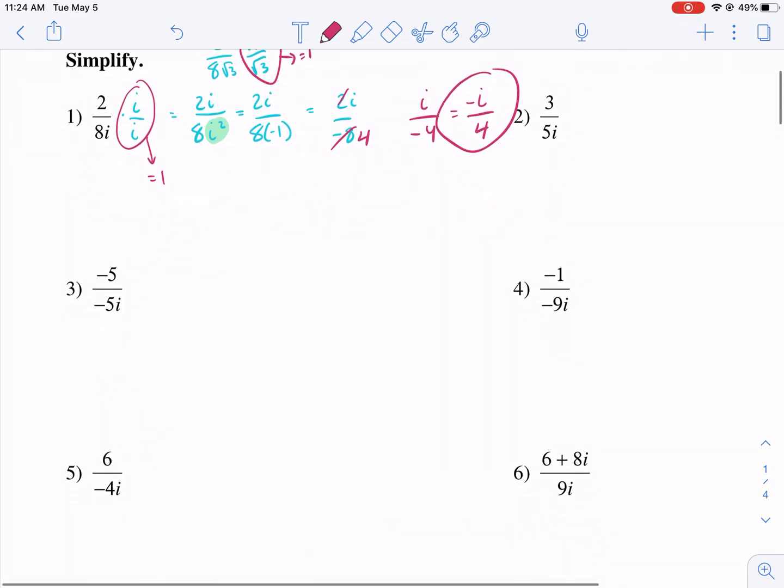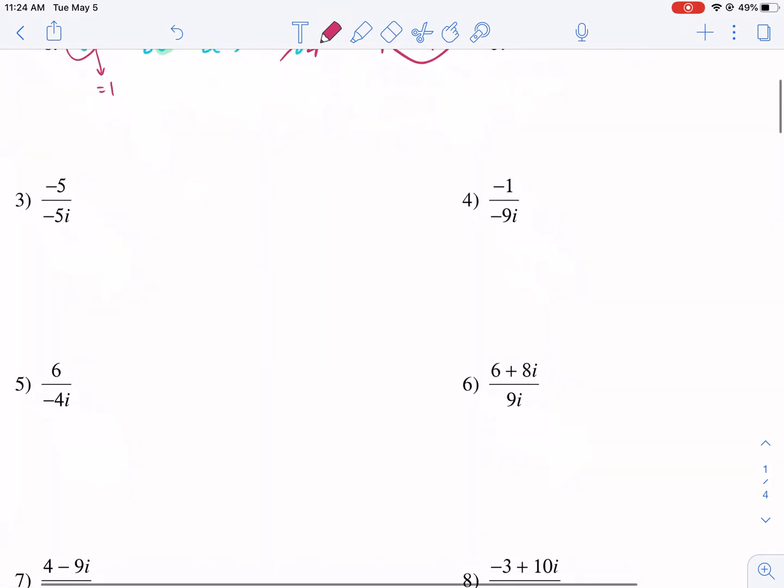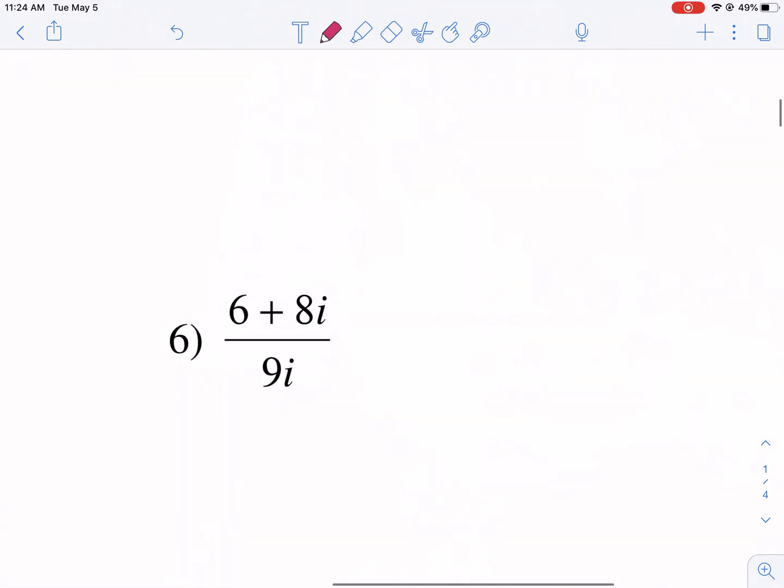Now let's move on to maybe a little bit more difficult problem. So let's go to number 6. So number 6, we see that we have an i. You don't need to multiply by 9i over 9i. You're just going to give yourself a little bit more work. The only thing you need to rationalize is the i, so we just need to multiply i over i.